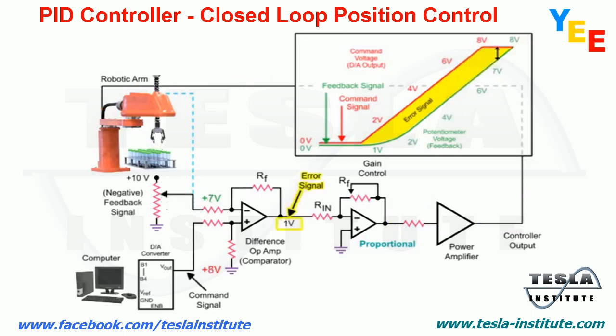When the arm reaches the desired position, the difference op-amp voltage is reduced to zero and the feedback voltage from the potentiometer equals the command voltage of the computer.